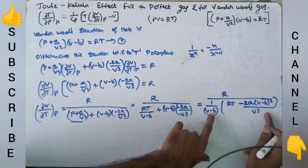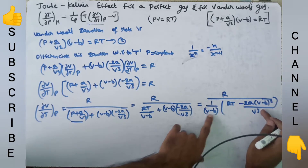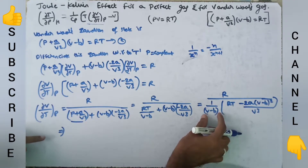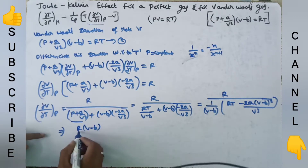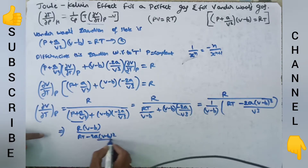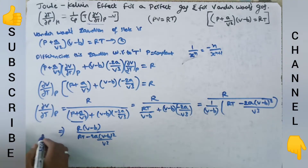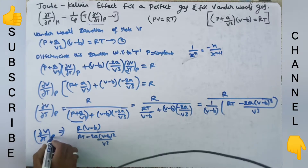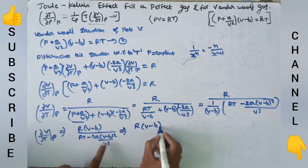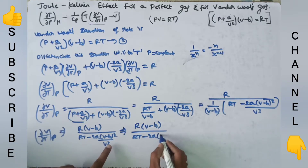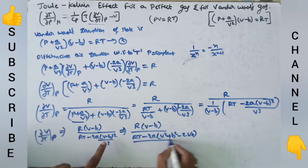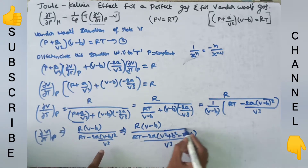When we multiply through, 1/(V - B) cancels and we get the same equation. Sending (V - B) to the numerator, it becomes R(V - B) / [RT - 2A(V - B)²/V³]. This is in the (A - B)² form, so we expand: (V - B)² = V² - 2VB + B². Thus the denominator becomes RT - 2A(V² - 2VB + B²)/V³.